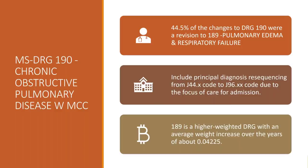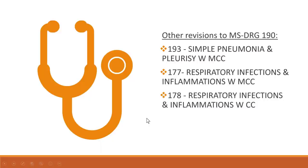DRG 190: 44% — almost half — of DRG 190 cases were changed to DRG 189, with the principal diagnosis being changed from J44 to J96. DRG 189 is a higher-weighted DRG, about 0.04225 higher than 190. Other changes from DRG 190 were to 193 for simple pneumonia, 177 for other respiratory infections, and 178.